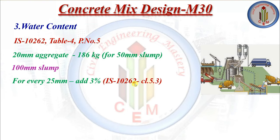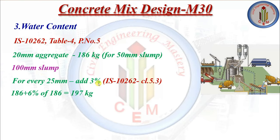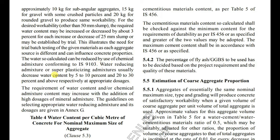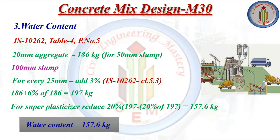So the adjusted water content is 186 + 6% of 186, which gives approximately 197 kg. Since we use super plasticizer, as per IS 10262, super plasticizing admixture can reduce water content by 20 to 30 percent. We reduce by 20 percent, giving a final water content of 157.6 kg per cubic meter.